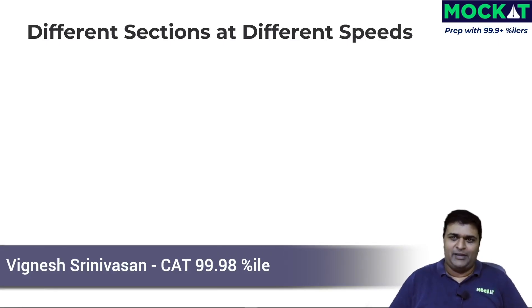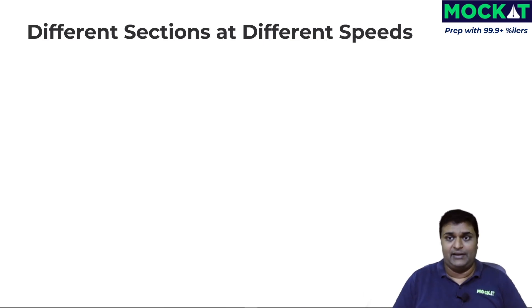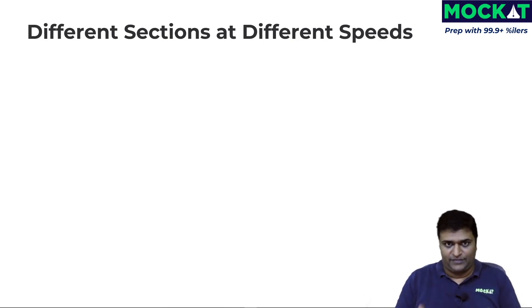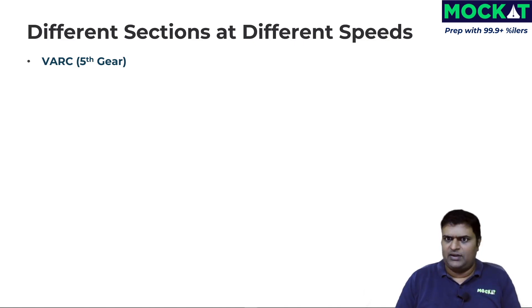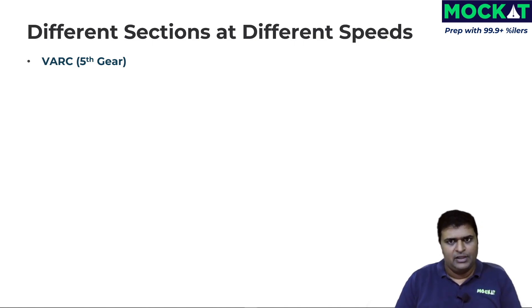In this video we look at the most common type of error which happens in exams, which is pacing your attempt right — making sure that we take the different sections of the CAT exam at different speeds. We start off with the verbal section and we need to be going at fifth gear. Those of you who have driven an automobile will understand what that means — you need to be going pretty fast, but at the same time carefully.